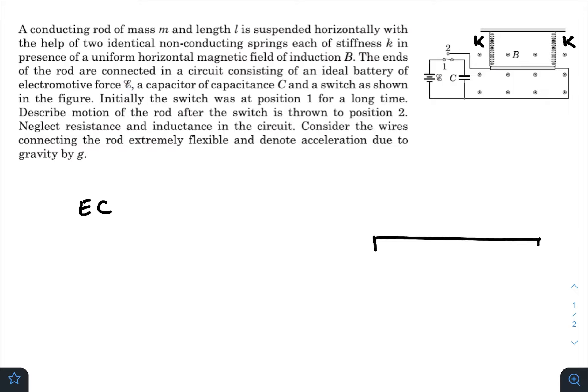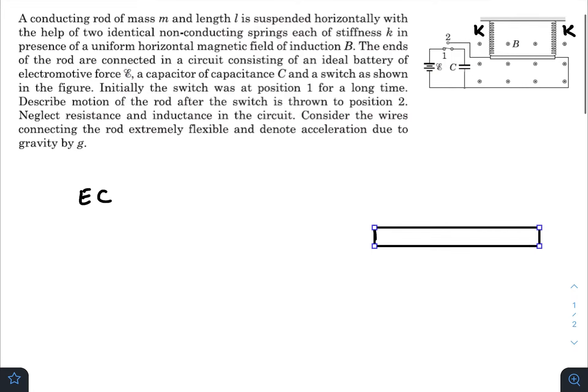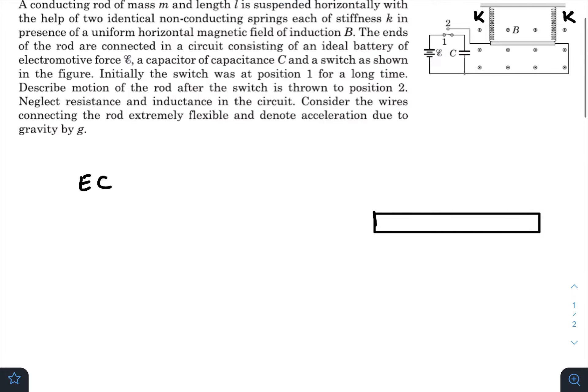Let me draw the diagram once again. This is our rod having mass m. Initially, just before throwing the switch to 2, the forces acting on the rod are mg and there was some initial stretching in both the springs. Let that be x naught, so here it is k x naught, and another k x naught, so the rod was in its equilibrium position.